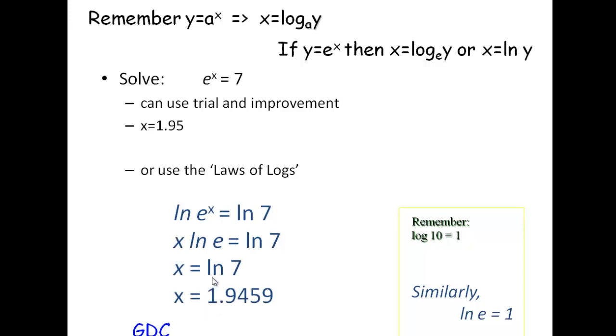And then it's just on the calculator, put in ln 7 and we get 1.9459.